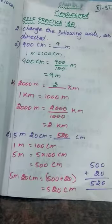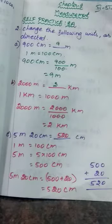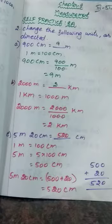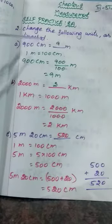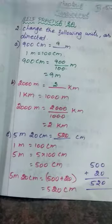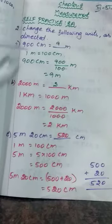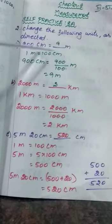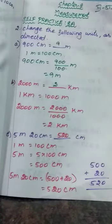See the second one. Change the following units as directed. So you have to convert the units. First one: 900 cm equals dash meter. So you have to convert this 900 cm into meter. In the last class we already saw the first sum.